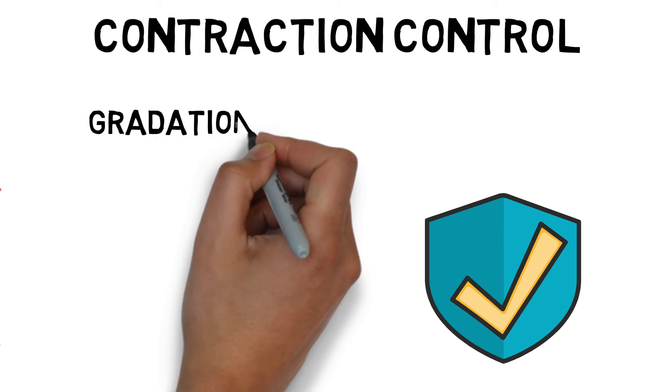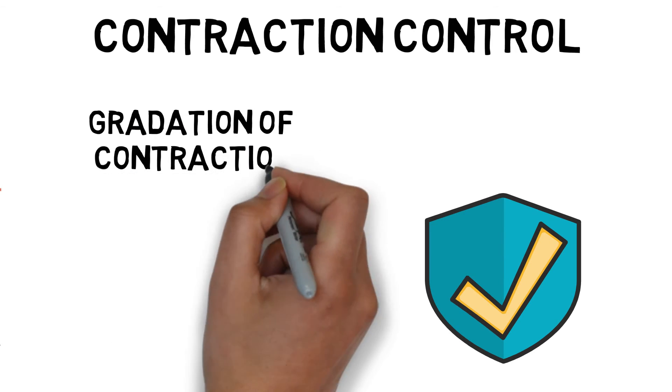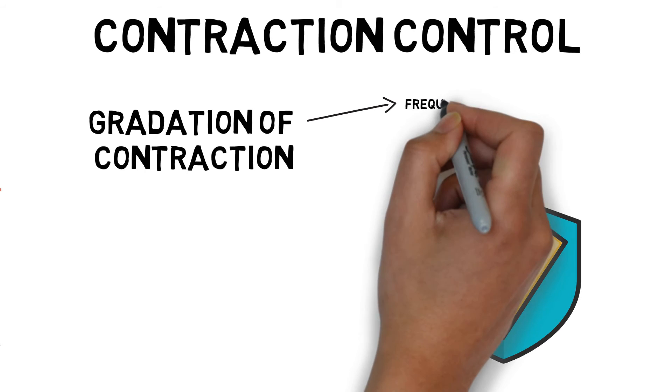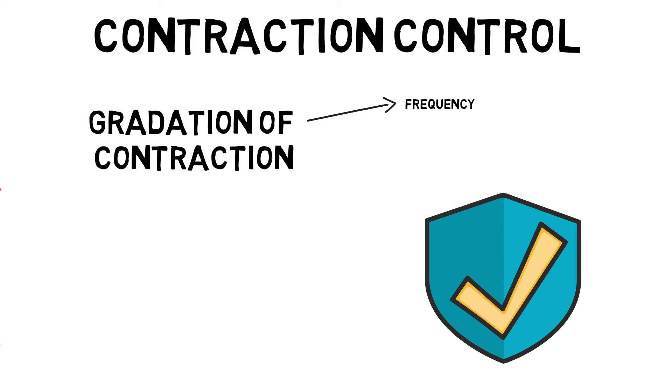This is known as gradation of contraction. This can be achieved in two ways. We can increase the frequency of stimulus, a bit like wave summation, and vary the number of motor units that are recruited.